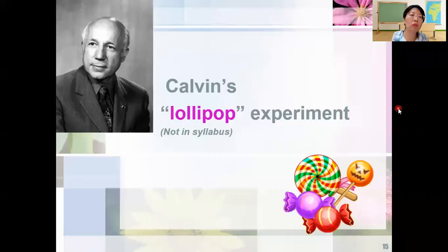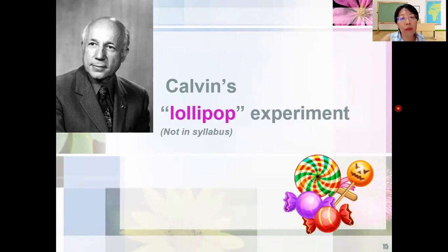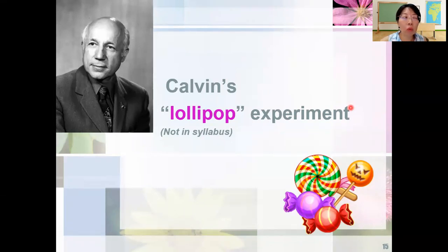In this session, I'm going to introduce Calvin's lollipop experiment. Even though it's not in the syllabus, it's a very good thing for us to learn how Calvin actually used chromatography to help him find out the sequence of events that occur during Calvin's cycle — how he knew that RuBP comes first, followed by CO2, followed by the unstable 6-carbon compound breaking into GP and then TP.